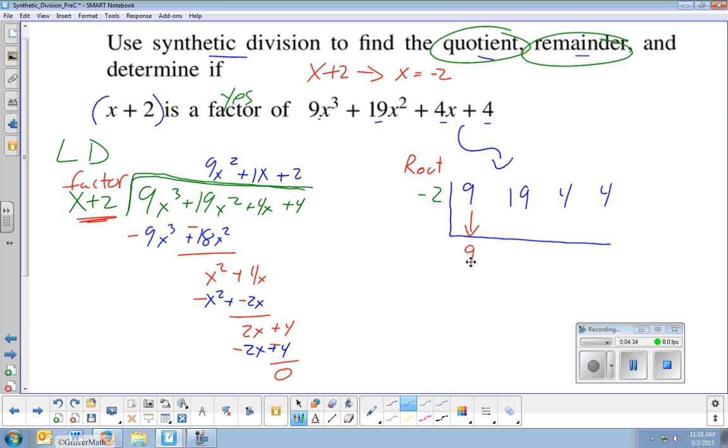Multiply it by your root. So, 9 times negative 2. That number goes here. Multiply. Negative 2 times 9 is negative 18. Add these together. Combine these together. We get 1. A positive 1. Then, repeat. And so, let me go back now and compare this.